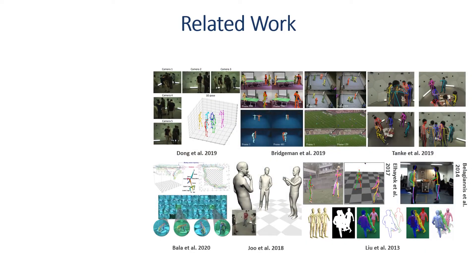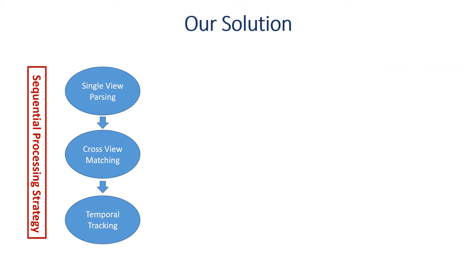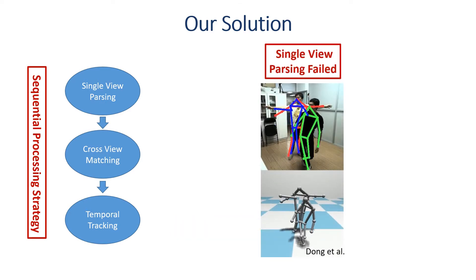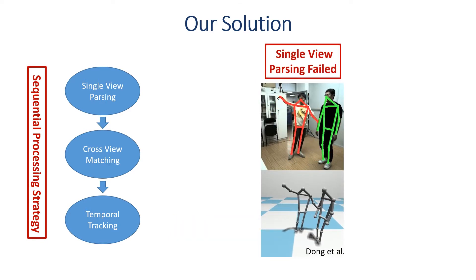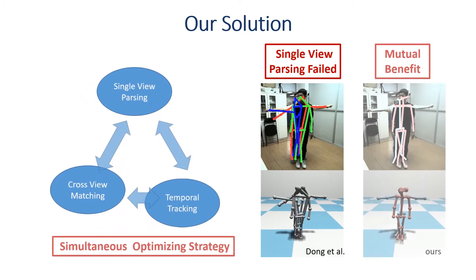Most previous methods share a similar high-level framework by first performing per-view person parsing, followed by cross-view person matching and temporal tracking sequentially. These sequential methods usually assume and rely on perfect single-view person parsing results in the first stage. However, this cannot be guaranteed in crowded or cross-interaction scenarios.